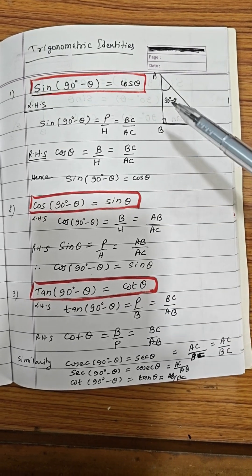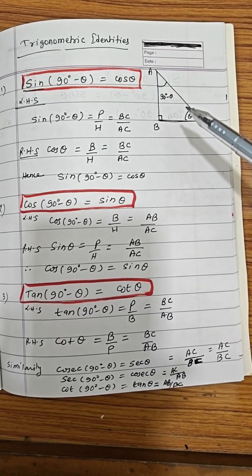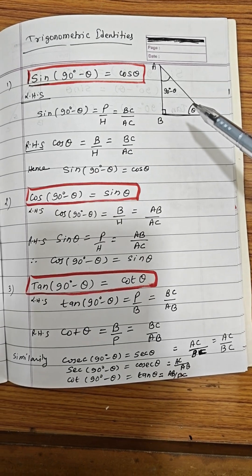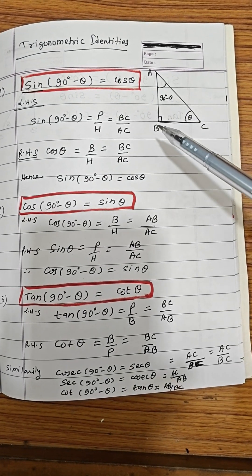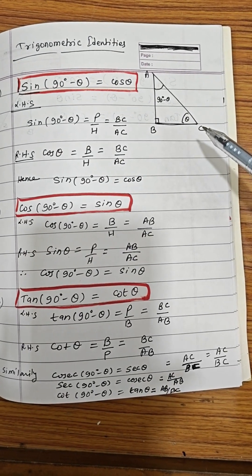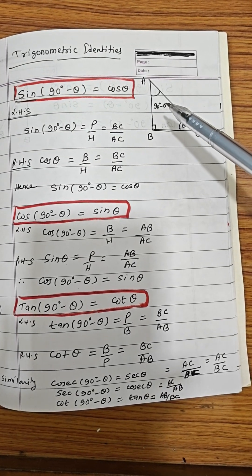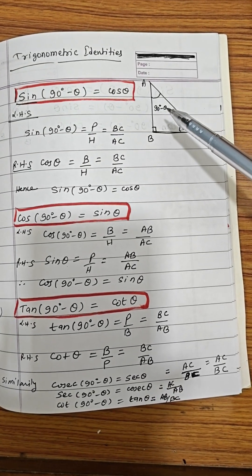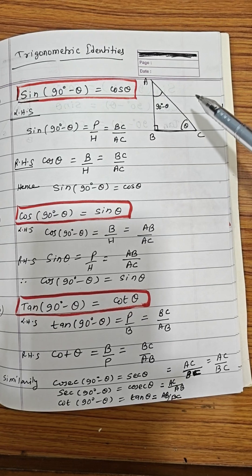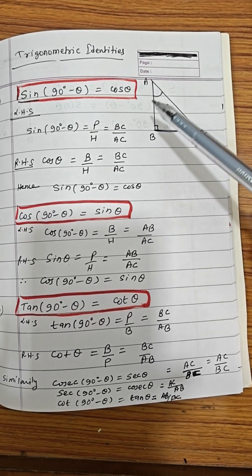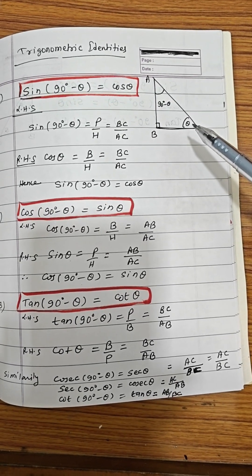Now how does it happen? Pay attention here about the right angle triangle, where angle B is 90° and angle is θ. Therefore angle A will be 90° - θ, because the angle sum property says the sum of angles in a triangle is 180°.